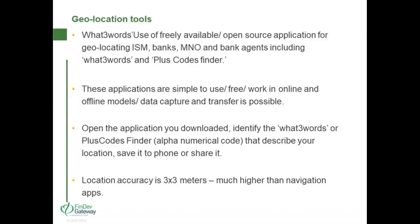We used these tools to locate savings groups, banks, mobile network operators, and bank agents. These tools are simple to use and work in both online and offline mode — which is important given that internet connectivity in rural Africa can be very unreliable. If you downloaded the What3Words app as we requested before the webinar, you can open it now, type your location, and get a three-word address accurate to a three-by-three meter square, which is far more precise than navigation apps like Google Maps.